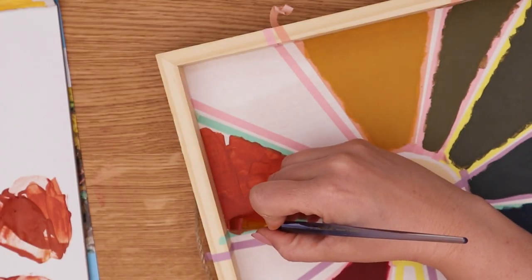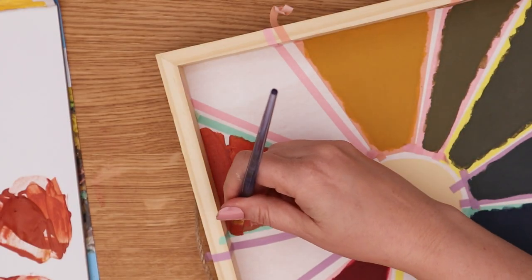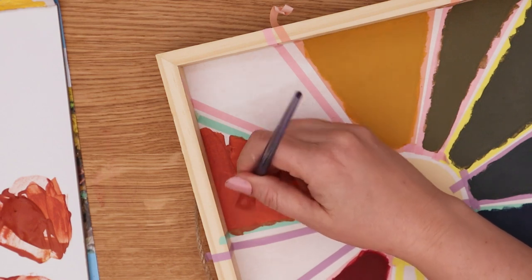And then we will paint in those three sections between the yellow and red with our orange, yellow orange, and red orange.